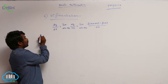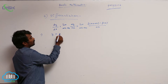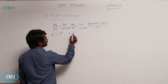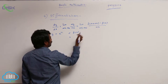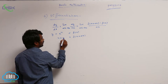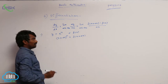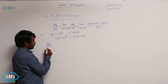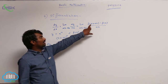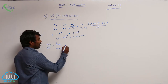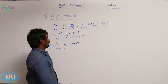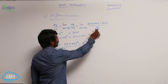Now let us solve one problem: y is equal to x power n. Let us differentiate this y with respect to x. We can take it as f of x, and we need f of x plus delta x. So wherever x is present, substitute x plus delta x, and you will get x plus delta x whole power n. So dy by dx is equal to the limit as delta x tends to 0 of x plus delta x whole power n minus x power n, all divided by delta x.